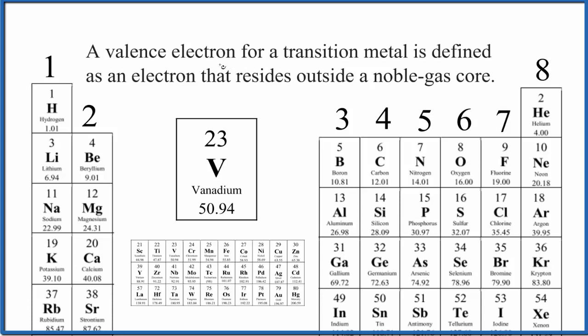If we use this definition here, a valence electron for a transition metal is defined as the electron that's outside the noble gas core. So if we write the electron configuration for vanadium and we look at its noble gas core, that should tell us the number of valence electrons. So let's do that.